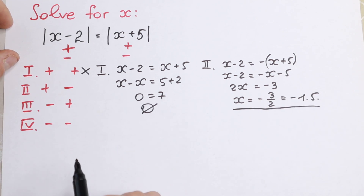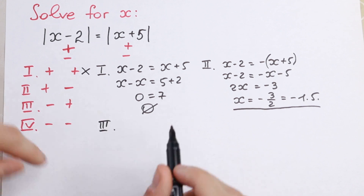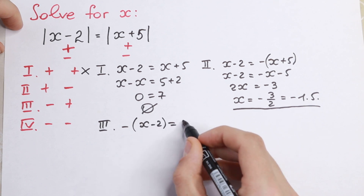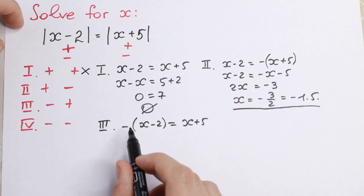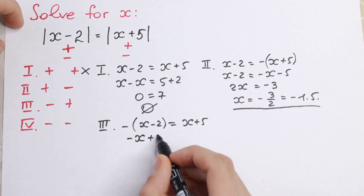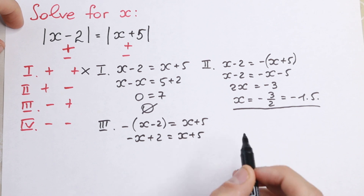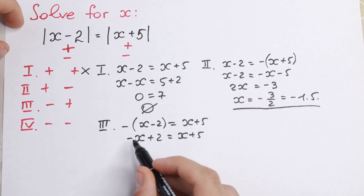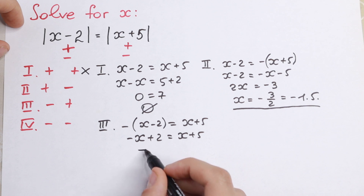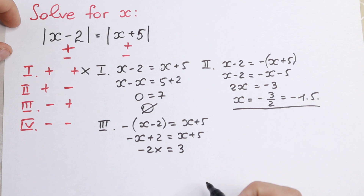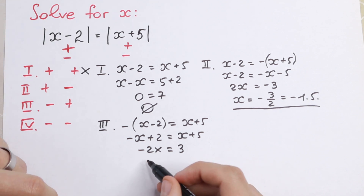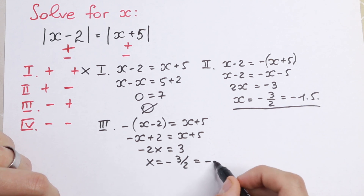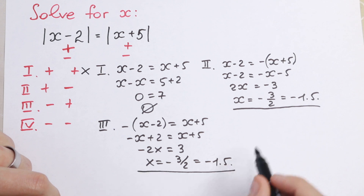We need to solve two more cases. Third case: minus and plus. We'll have minus parentheses x minus 2, equal to x plus 5. Open the parentheses: minus x plus 2 equals x plus 5. Bring this x to the left: minus x minus x gives minus 2x, equal to 5 minus 2, which is 3. Dividing both sides by minus 2, x equals minus 3 over 2, which equals minus 1.5 — the same as in the second case.